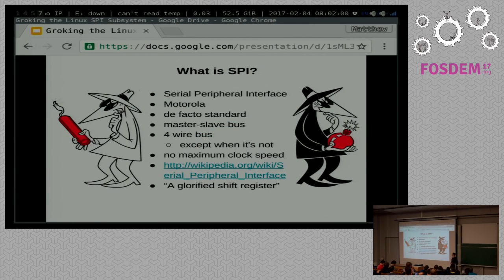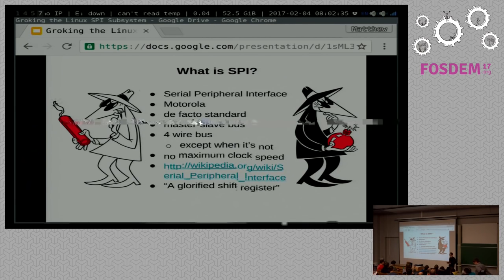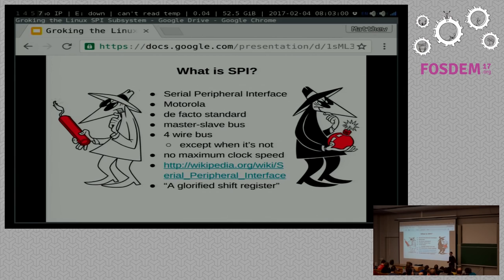So getting into what spy is: serial peripheral interface. Motorola developed this. It's a de facto standard, so if you're hoping for a written spec with a committee, you won't find it here. It's a master-slave bus, four wires. We'll talk a little bit about the signals coming up here, except when it's not. There's no maximum clock speed; obviously there are practical limits that chips run into.